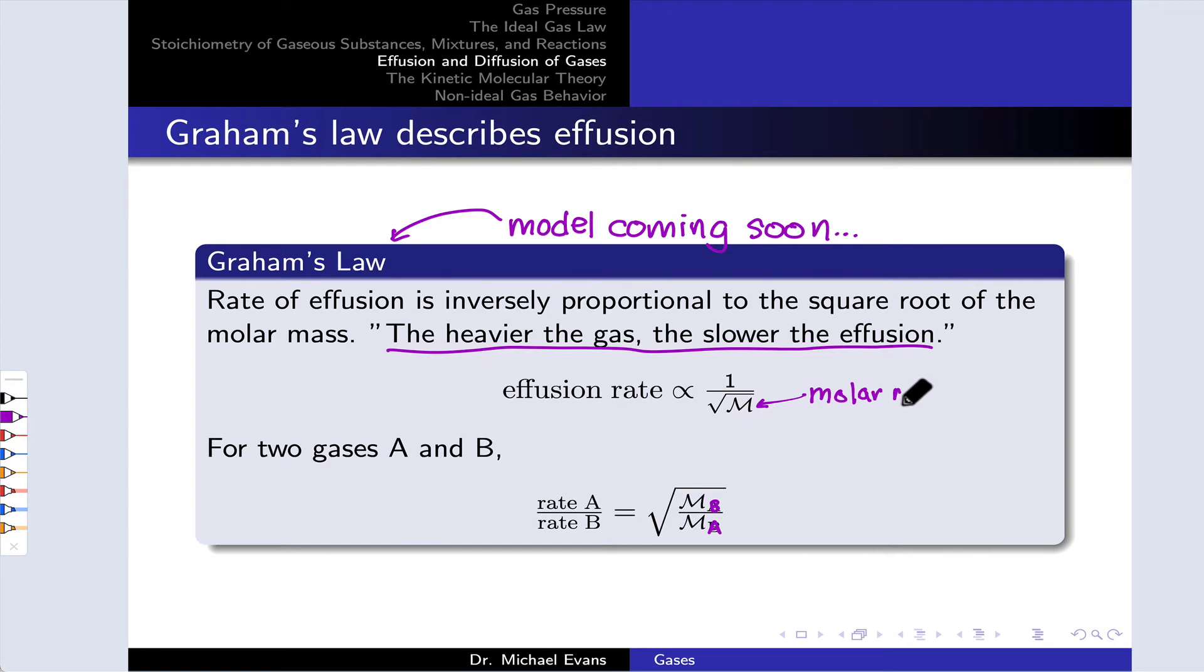We can think about Graham's Law in a relative sense by setting up a ratio of two rates of effusion. And this is usually more useful since the proportionality doesn't tell us a ton. We're interested in the relative rates of effusion.